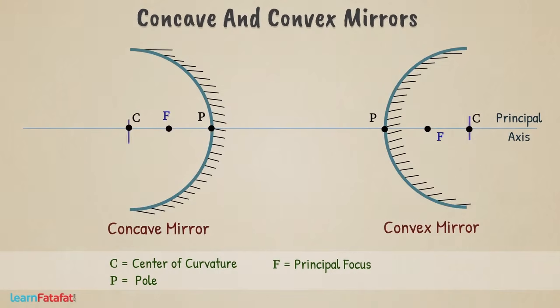The diameter of reflecting surface of the spherical mirror is called as aperture.